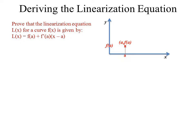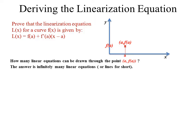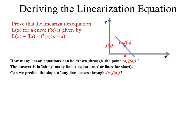We'll also ask a question about this point: how many lines pass through the point A comma F of A? The answer is there are infinitely many lines that could go through this point. To explore this, we place a purple line through A comma F of A and rotate it clockwise 360 degrees around that point.